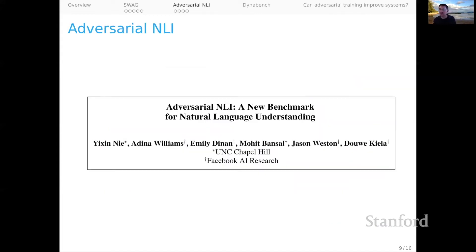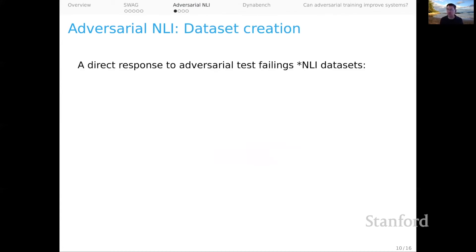Now let's move into a slightly different mode — a kind of human-in-the-loop adversarial data set creation method. The first entry in this space was the adversarial NLI data set. I think this is a really visionary and exciting paper. Adversarial NLI is a direct response to what we've seen with the SNLI and multi-NLI data sets, where models seem to do well on those benchmarks but are easily susceptible to simple adversaries.